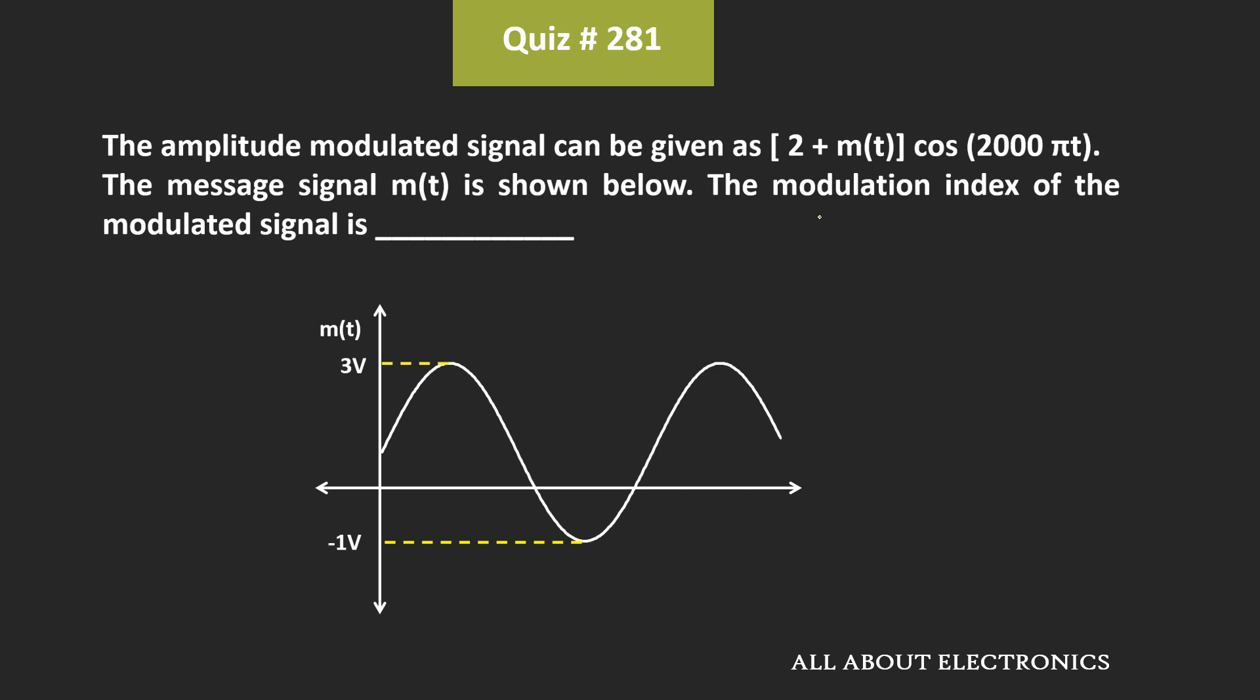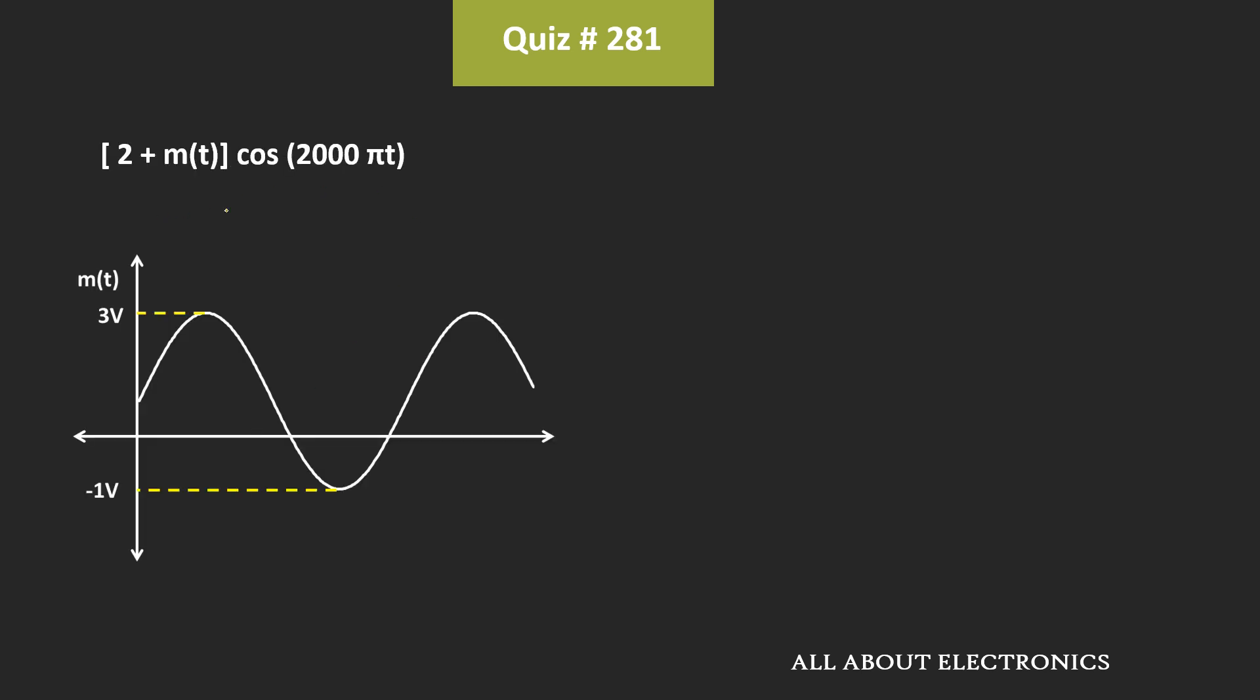So here, we have been asked to find the modulation index for the AM signal. So here, this is the expression of the AM signal, which is of the form AC plus m(t) times cos(ωct). That means here, the maximum amplitude of the carrier signal is equal to 2.